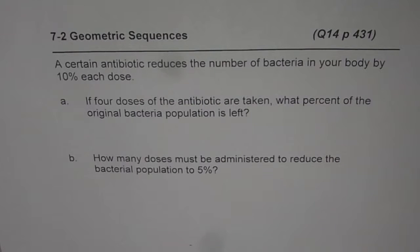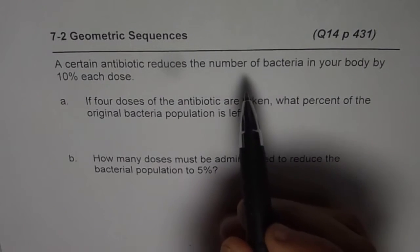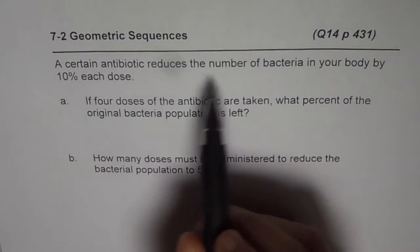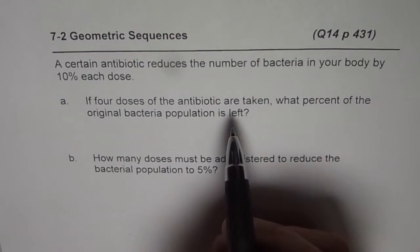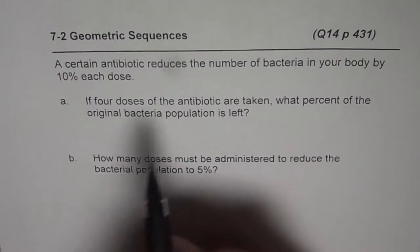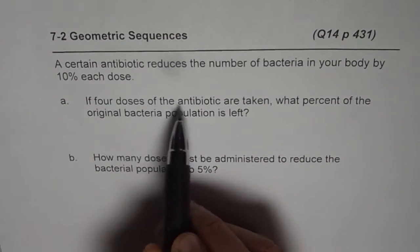Part B asks how many doses must be administered to reduce the bacteria population to 5%. In this type of question, first we should write our equation. We see that every time 10% of the bacteria are killed by the dose, so that means what exists is 90%.